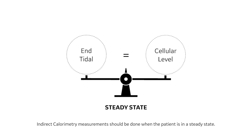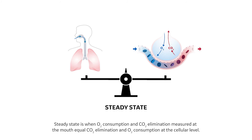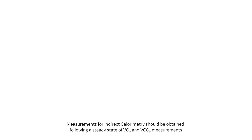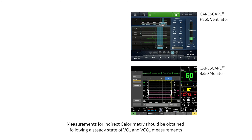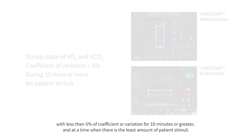Indirect calorimetry measurements should be done when the patient is in a steady state. Steady state is when O2 consumption and CO2 elimination measured at the mouth equals CO2 elimination and O2 consumption at the cellular level. Measurements should be obtained following a steady state of VO2 and VCO2 with less than 5% coefficient of variation for 10 minutes or greater, and at a time when there is the least amount of patient stimuli.